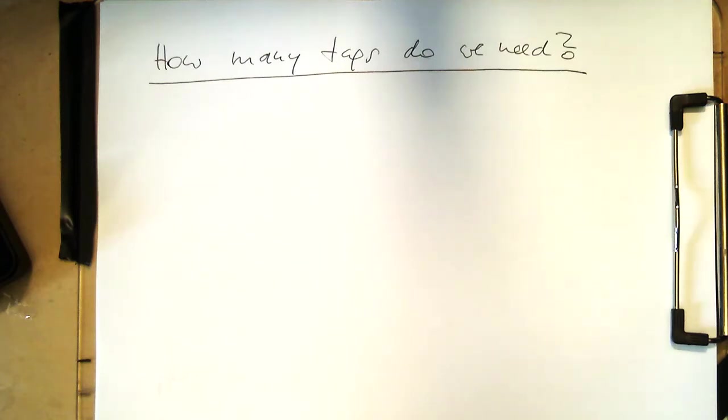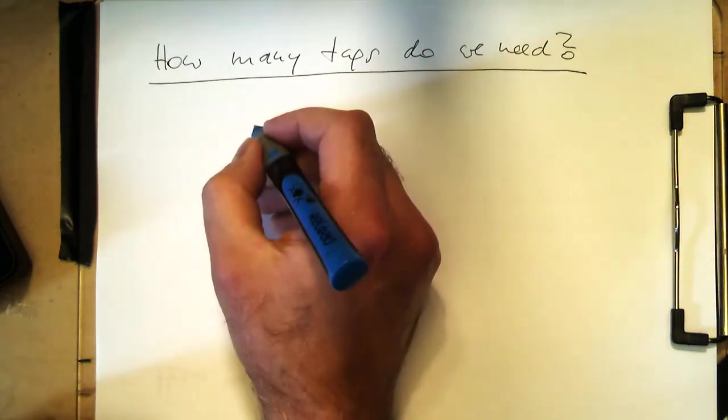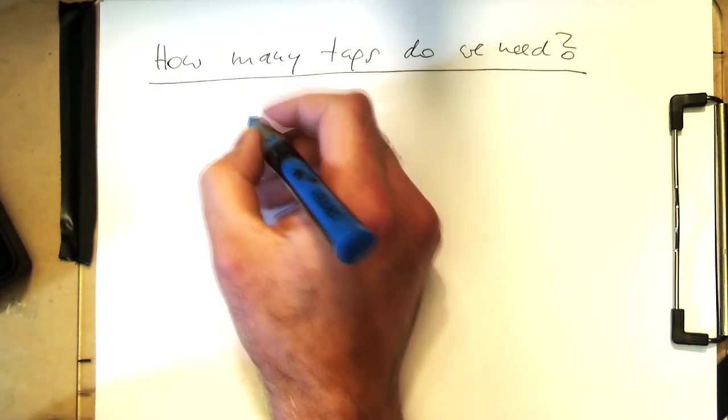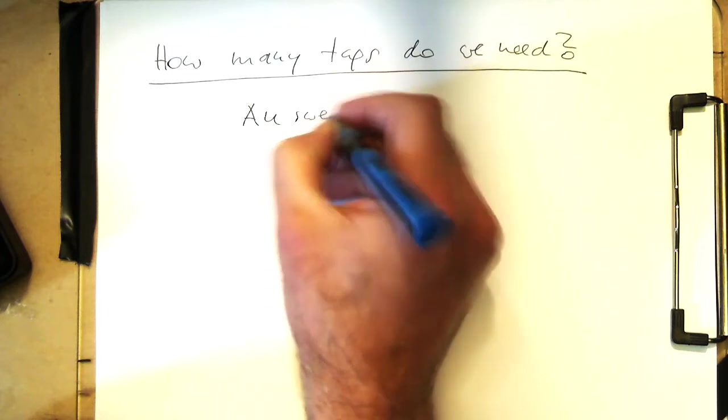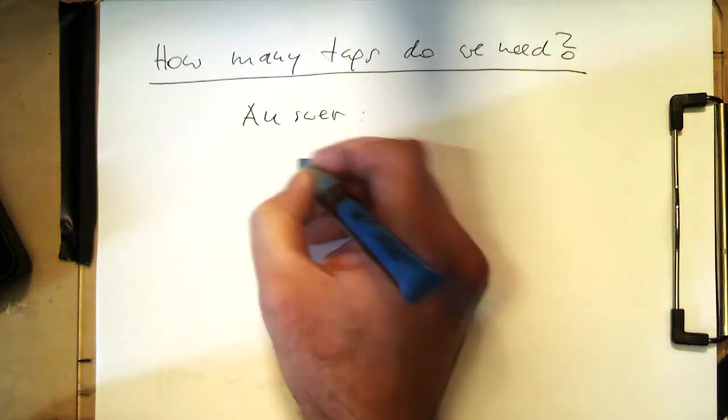So the question is now, how many taps do we actually need for our FIR filter? Obviously, the less computational effort there is. And to answer this question here, the answer lies in the DFT or the simplest way of finding this. The answer is, let's have a look at the DFT.